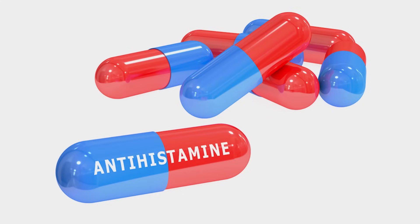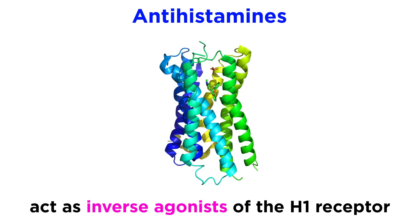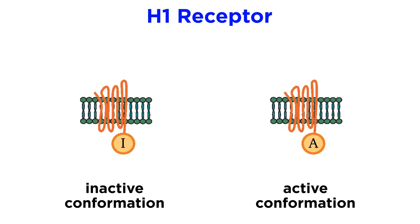Antihistamines help prevent this cascade from occurring, so let's discuss the mechanism by which this occurs. Antihistamines do not prevent the release of histamine, but rather inhibit its pro-inflammatory effects by acting as inverse agonists of the H1 receptor. The H1 receptor has a high level of basal activity, which means it can undergo spontaneous conformational changes towards active receptor conformations, even in the absence of histamine.